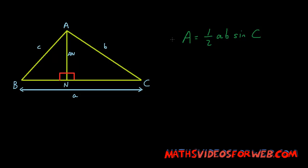Hi, in this video I'll be proving why the formula for areas of triangles is half AB multiplied by sine C.